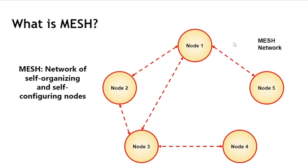Think about it as a very large local area network. Whoever registered the IP addresses for amateur radio in the 70s was a genius, because he registered all the Class A 10-dot IP addresses. That's millions of addresses that can be used for this.